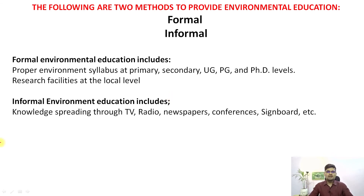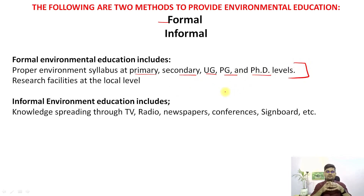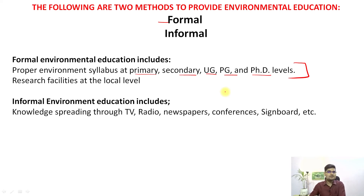The methods of providing environmental education are divided into two segments: the formal approach and the informal approach. The formal approach covers education available at primary, secondary schools, UG, PG, and PhD research levels. In formal education, you progress through classes and achieve a degree — from school to college to postgraduate to research. Environmental education is compulsory in formal education, or should be wherever it is still pending.